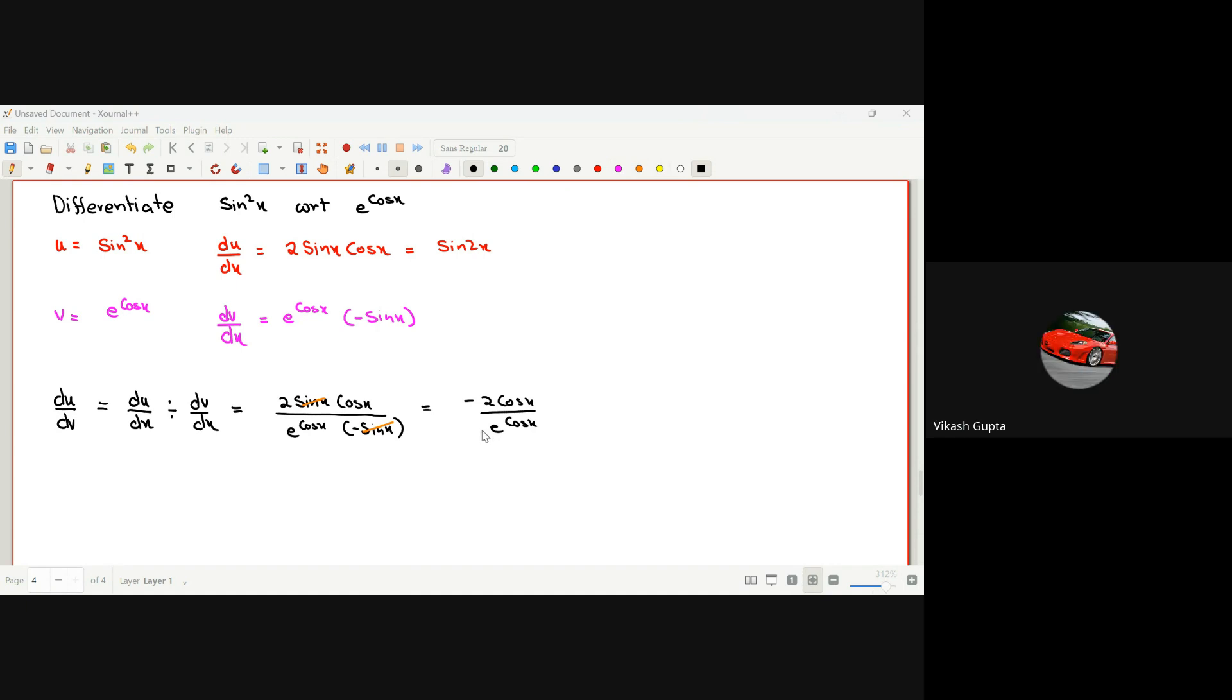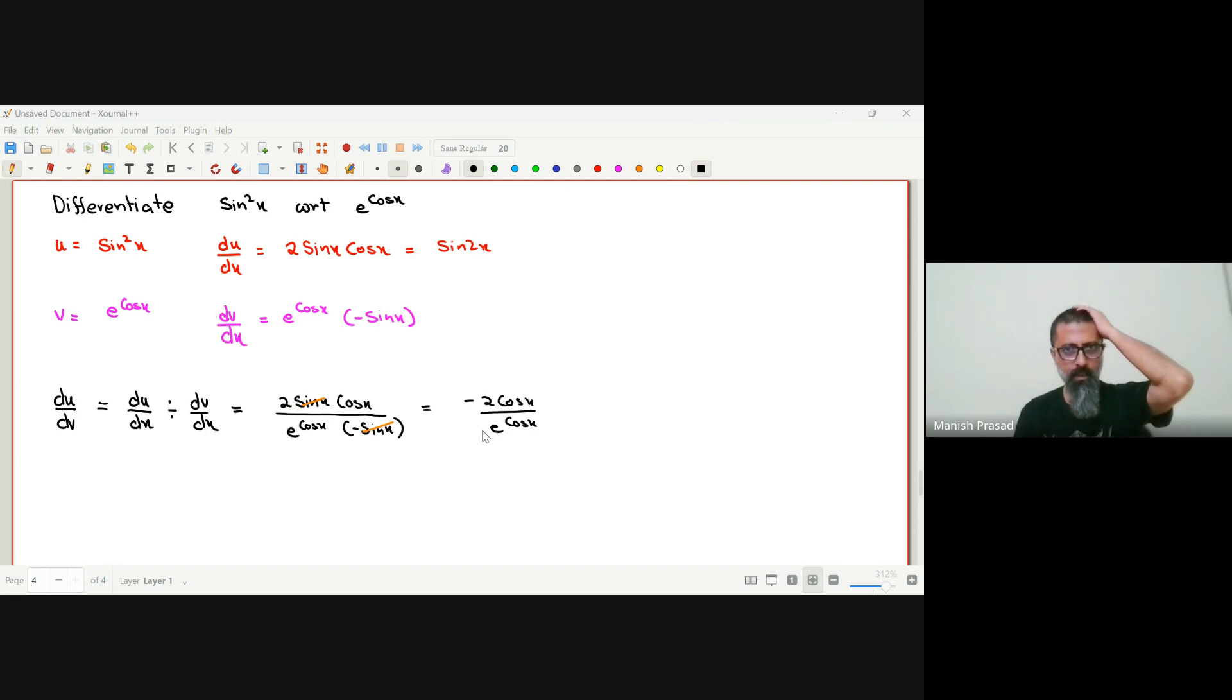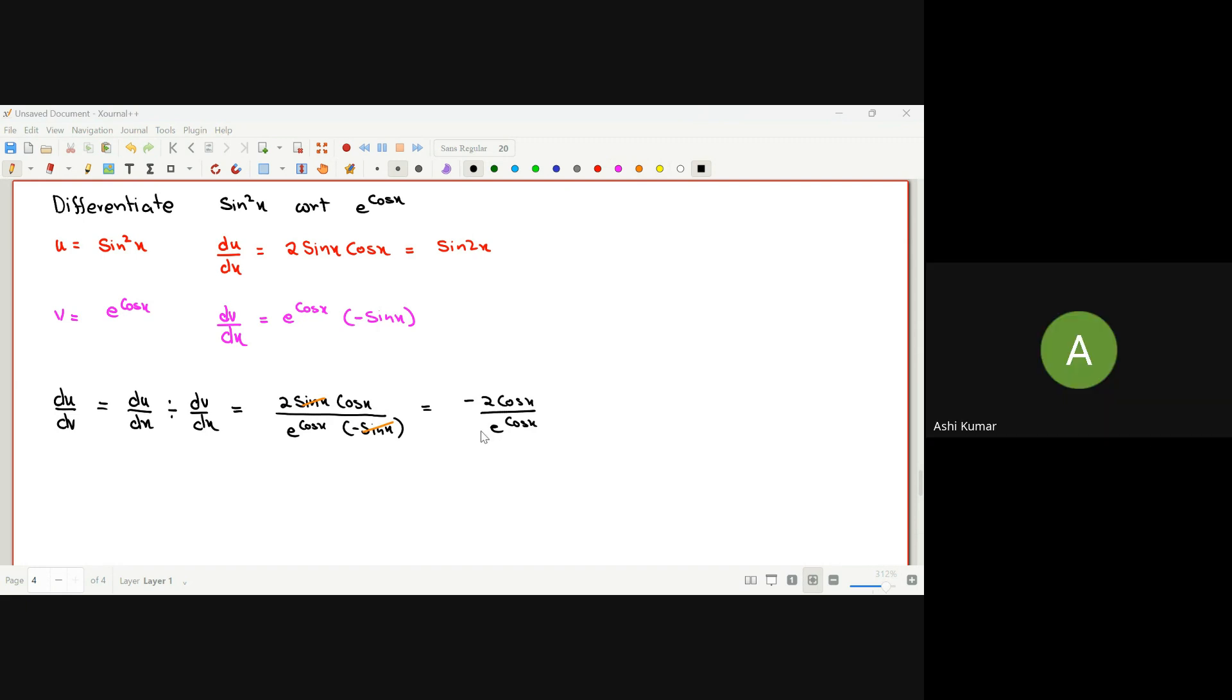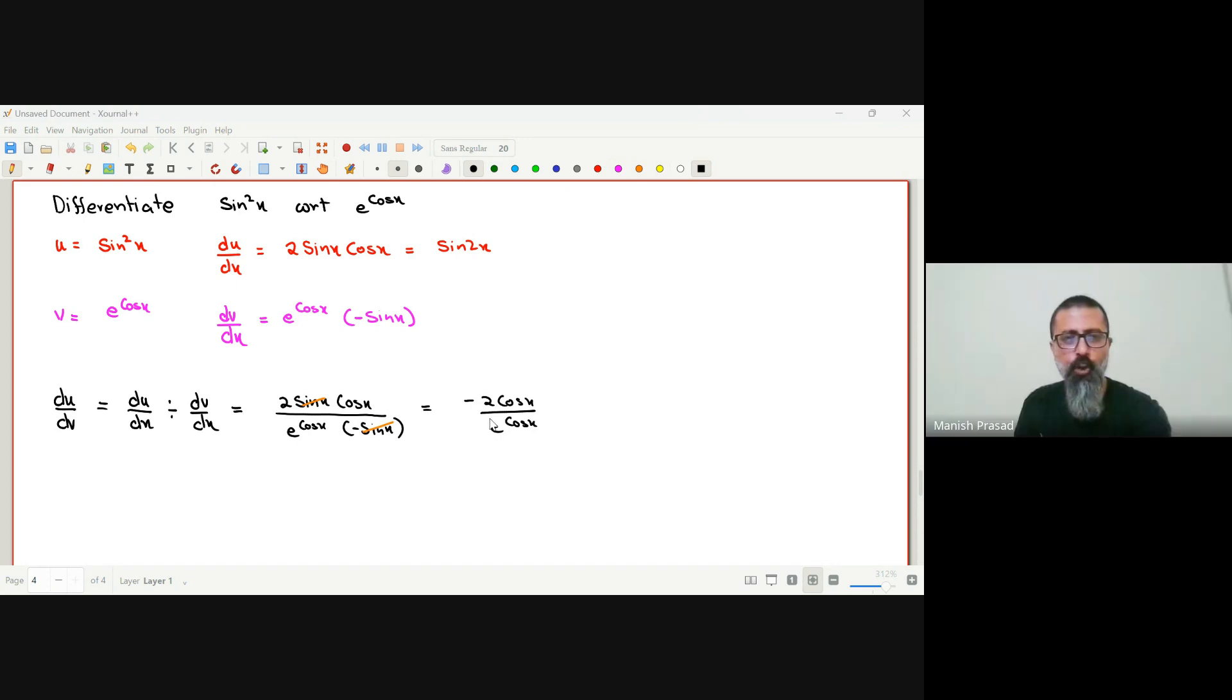नहीं गलत होगे थोड़ा. Sir, 2 sin x cos x कहां से आया? 2 sin x cos x कहां से आया? ओके, चेक करते हैं.